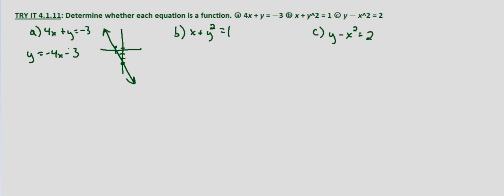As it does in your online lesson, we can go ahead and just plug in an x value to see what it does. Let's say we plug in x equals 2. So at x equals 2, we have y equals negative 4 times 2 minus 3, which equals negative 11. And it would be the same with any x value. We're going to multiply it by negative 4 and subtract 3, so that's not going to result in multiple y values for the same x value. We can definitively say that this first example is a function.